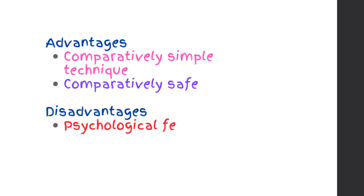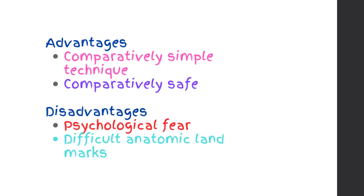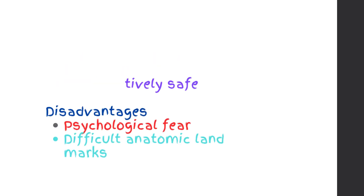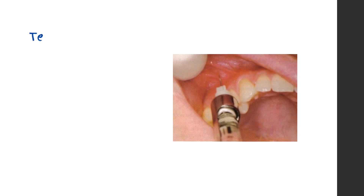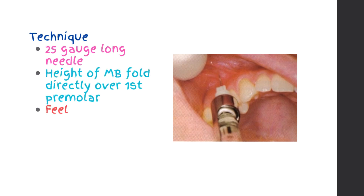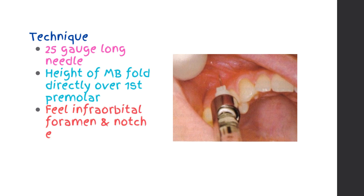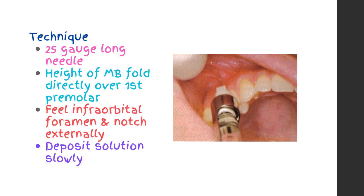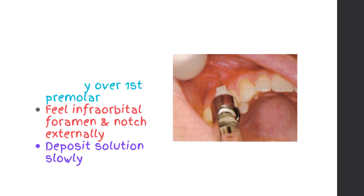Disadvantages: psychological fear; difficult anatomic landmarks. Technique: 25 gauge long needle. Insertion at the height of the muco-buccal fold directly over the first premolar. Feel the infraorbital foramen and notch externally. Deposit solution slowly.